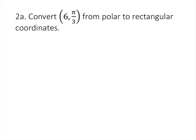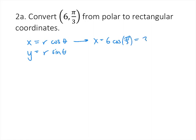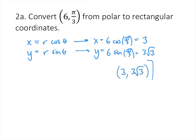Converting from polar to rectangular coordinates is almost always easier. We simply use x = r·cos(θ) and y = r·sin(θ). For the point (6, π/3): x = 6·cos(π/3) = 6·(1/2) = 3, and y = 6·sin(π/3) = 6·(√3/2) = 3√3. So the rectangular coordinates are (3, 3√3).